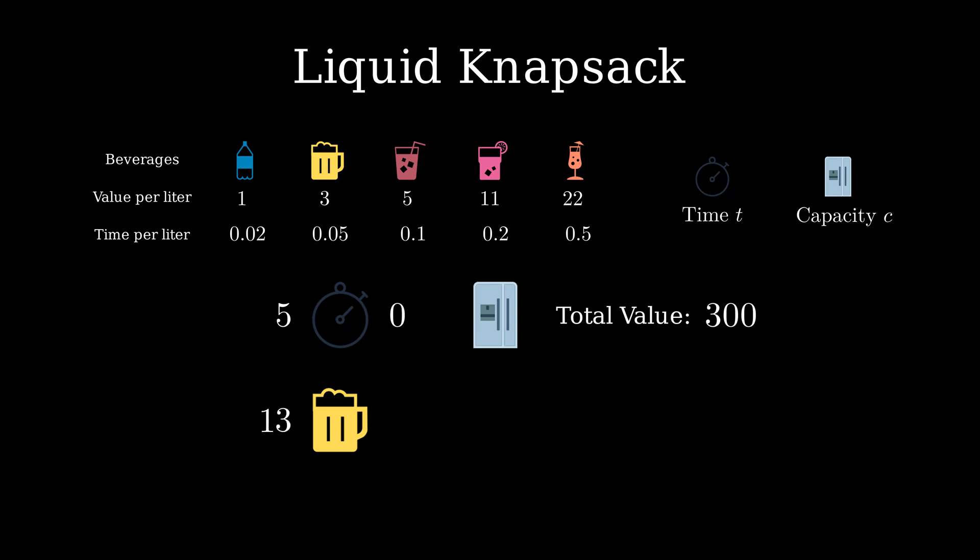In fact, the best solution produces beer and cocktails and achieves a total value of 566. Unfortunately, the greedy strategy did not lead us to the best solution in this setting. How could we find the optimal solution?